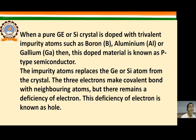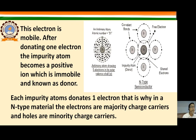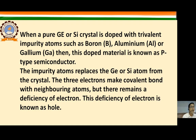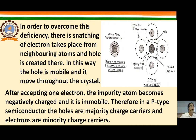When pure germanium or silicon is doped with trivalent impurity atoms such as boron, aluminum, or gallium, the doped material is known as a p-type semiconductor. The impurity atom replaces germanium or silicon atoms from the crystal, and its three electrons make covalent bonds with neighboring atoms, but there remains a deficiency of one electron. This deficiency is known as a hole.